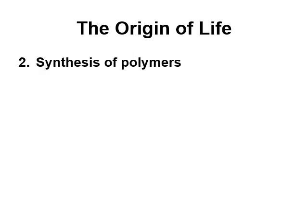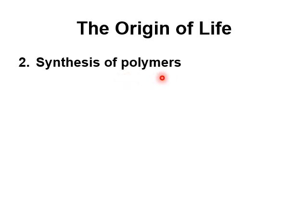We know that amino acids and nucleotides are great, but what we actually need are proteins, DNA, and RNA — those monomers need to be formed into polymers. Inside living things, amino acids and nucleotides are put together by those living things to make proteins and DNA, but there must have been some way for this to happen spontaneously before life began. There are some ideas about how polymers could have formed spontaneously once amino acids and nucleotides were around.